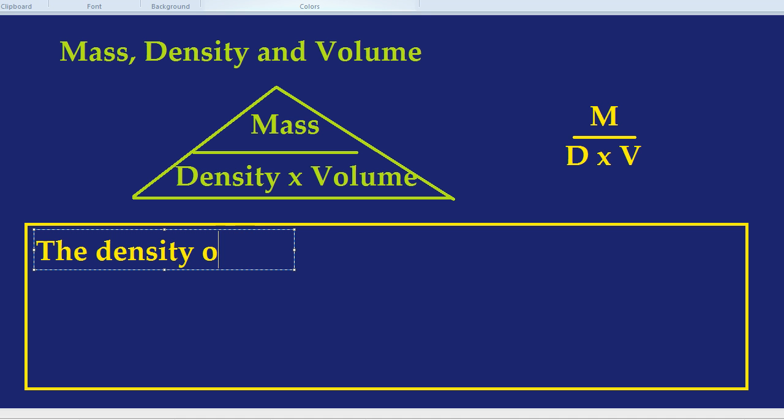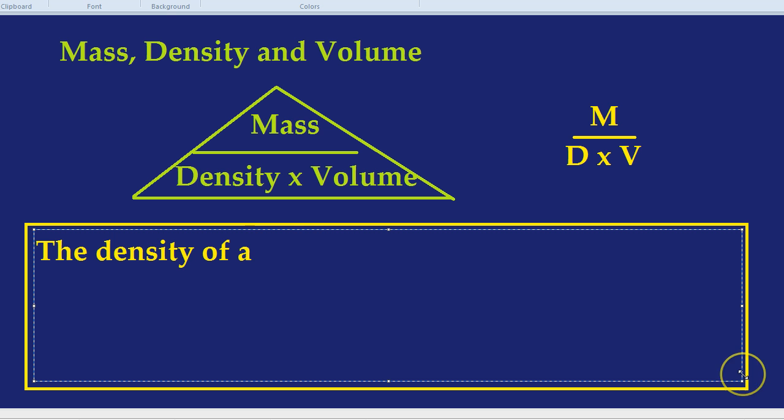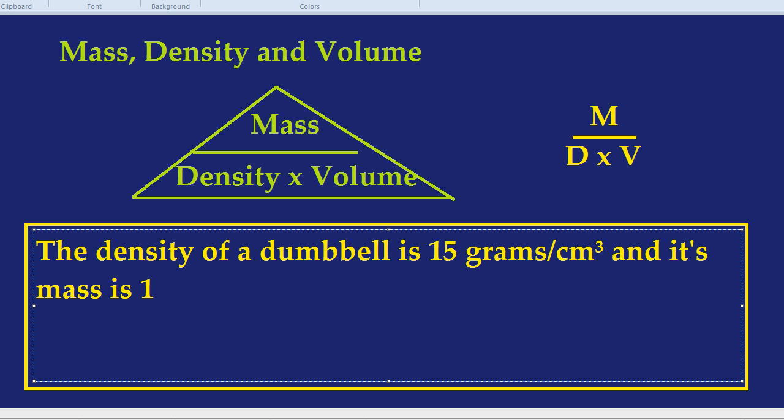The density of a dumbbell, which is one of those weights that I have in my room, is something like 15 grams per centimetre cubed. And its mass is 15 kilograms, which is accurate. I mean, it's quite heavy. I struggle to do more than about 30 in each arm, but there we are. Work out the volume of the dumbbell.